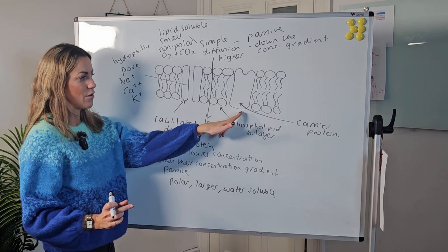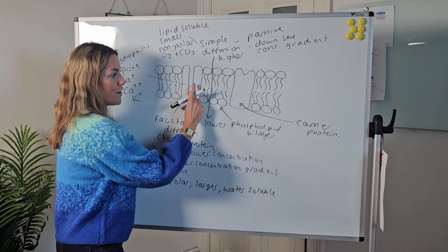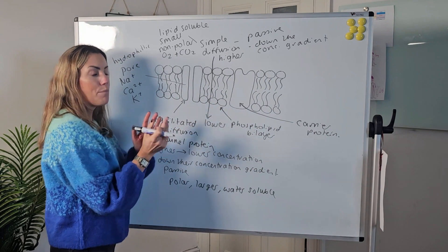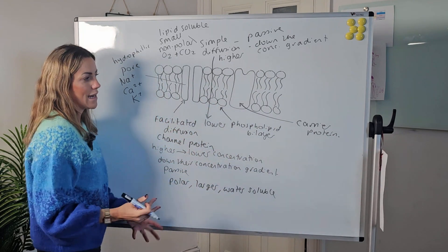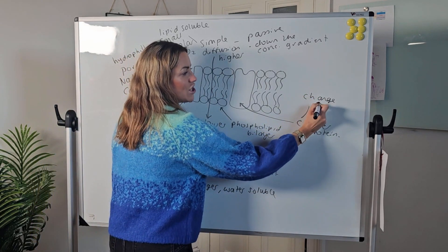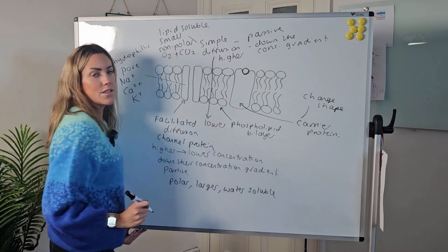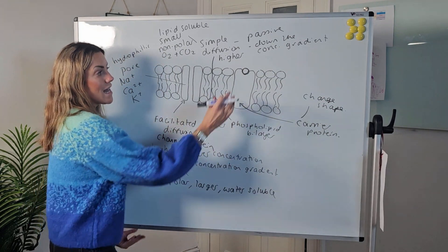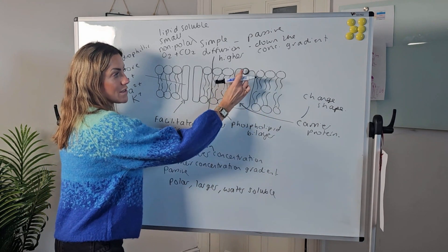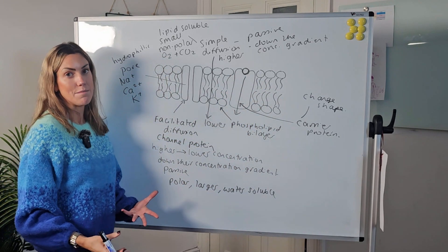Now a carrier protein is another example of an integral or intrinsic protein because, just like the channel protein, it does span both sides of the phospholipid bilayer. But carrier proteins actually change shape. The substance is going to bind to the carrier protein on one side, there'll be a conformational change or a shape change, and when that protein changes shape, it will move the substance across to the other side of the membrane.